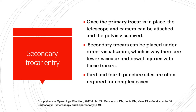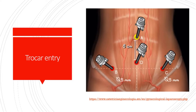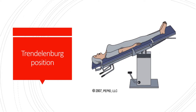Once the primary trocar is in place, we insert the telescope with the camera attached to visualize the pelvis. Secondary trocars are then placed under direct visualization with the camera, which is why there are fewer vascular and bowel injuries with these secondary trocars. Third and fourth puncture sites are often required for complex cases. Once primary and secondary trocars are in place, we set the patient in the Trendelenburg position, which is very important because it displaces the bowels upward and allows better visualization of the pelvic organs.